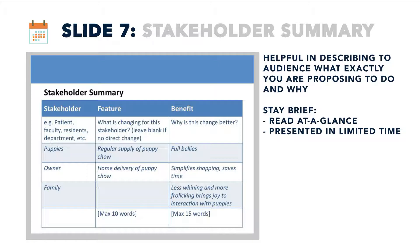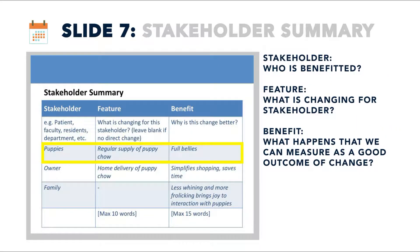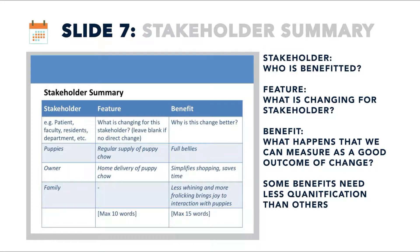Following the example of the puppies, the first stakeholder is the puppies. The feature is that they're going to have a regular supply of puppy chow, and their benefit will be full bellies — a measurable positive outcome. The owner, Dr. Smith, is the next stakeholder. The feature is home delivery instead of frequently buying puppy chow from the store, and the benefit is simplifying shopping and saving him time. The third stakeholder is the Smith family — the owners and their children. No feature is listed for them, as they are simply enjoying their puppies. Their benefit is enjoying the puppies more because there will be less whining and more frolicking. Use the fewest words possible so it can be viewed at a glance by the audience and presented quickly.